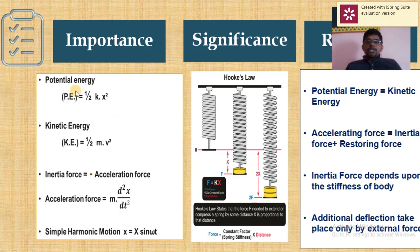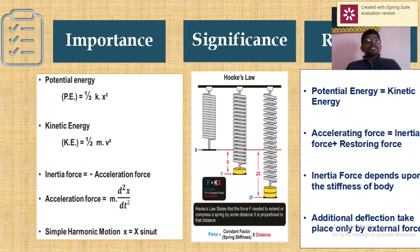The potential energy formula is half into kx², kinetic energy is half into mv². Inertia force is simply in the opposite direction to the accelerating force. The simple harmonic motion equation is x = X·sin(ωt), where capital X is maximum displacement and ω (omega) is the natural circular frequency. f is the natural frequency.